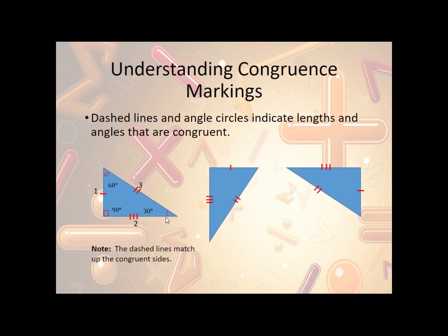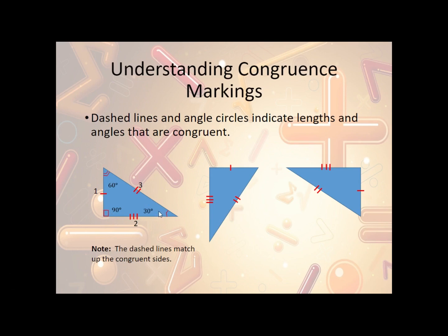The same applies to angles. If it's a 90-degree angle, we put a box; otherwise we use an arc. We can have a single, double, or triple arc to represent different angles. So we have our 90-degree angle marked with a box, which matches up with the corresponding 90-degree angle. Then we have a single arc and a double arc indicating which angles are congruent across the triangles.